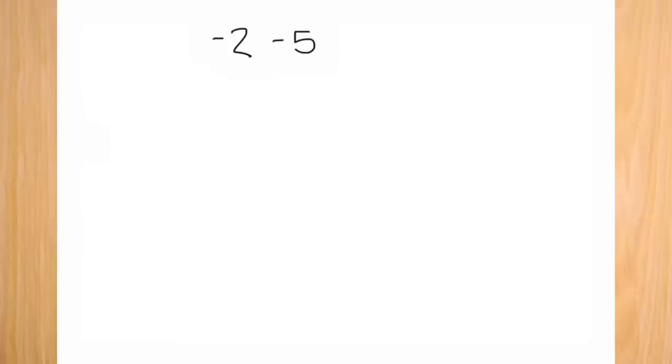The last and final method is traditional method. First, you will write your expression negative two minus five. Now, you will rewrite your expression and add the opposite. This means that we are taking the subtraction expression and turning it into an addition expression, and changing positive five into a negative five. We can do this because subtraction is equivalent to adding the opposite.